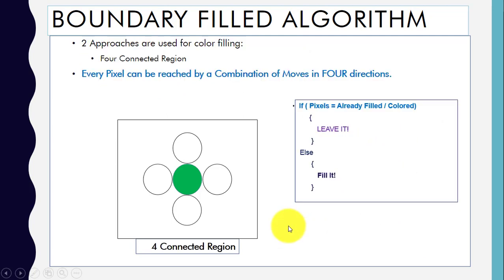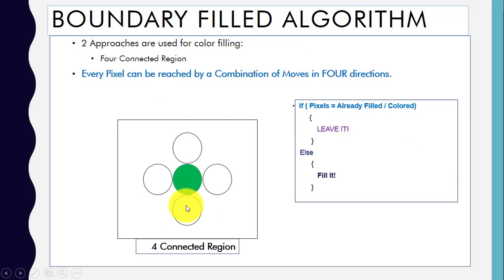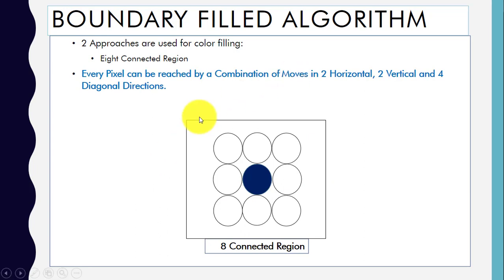How do we reach all the pixels? In a four-connected region, every pixel can be reached by a combination of moves in four directions: left, right, up, and down. In an eight-connected region, every pixel can be reached by a combination of moves in two horizontal, two vertical, and four diagonal directions.